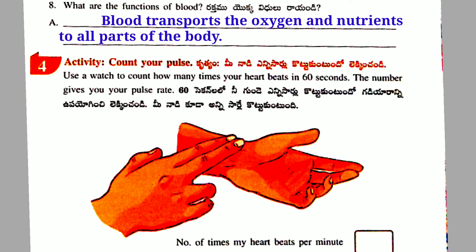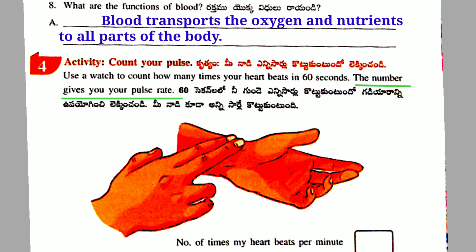Fourth activity: Count your pulse. Use a watch to count how many times your heart beats in 60 seconds. The number gives you your pulse rate. Number of times my heart beats per minute: 72, 32.